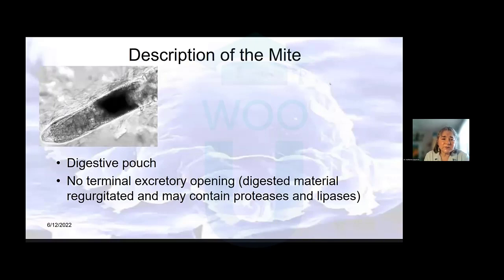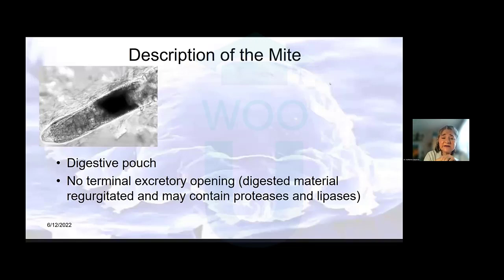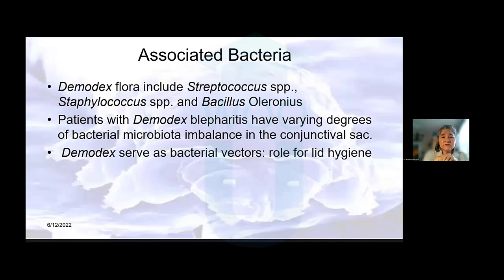What's interesting to appreciate is that the mite has a digestive pouch with no terminal excretory opening, which means that material ingested through the oral needle is digested but there is no exit. It's probable that digested remains are regurgitated, and these will contain some lipases and proteases that can incite an inflammatory reaction in the host. What goes in one way goes out the same way. And like its host — humans — who have flora on our ocular surface, skin, and gut, so do demodex mites.